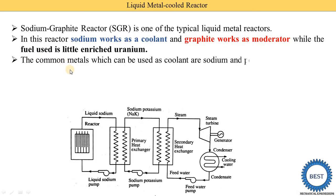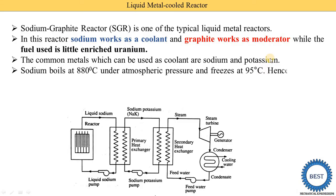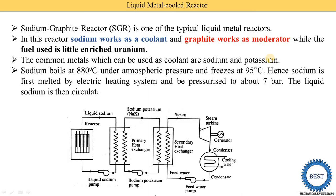The common metals used as coolants are sodium and potassium. Majority of reactors use sodium, while some places also use potassium. Sodium boils at 880 degrees centigrade under atmospheric pressure and freezes at 95 degrees centigrade, meaning we can operate sodium at atmospheric pressure.